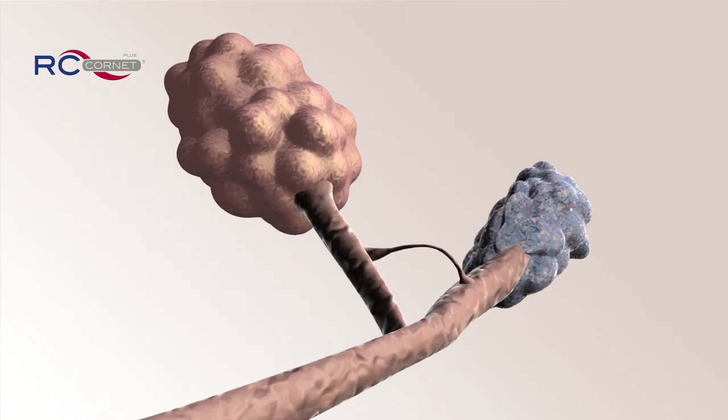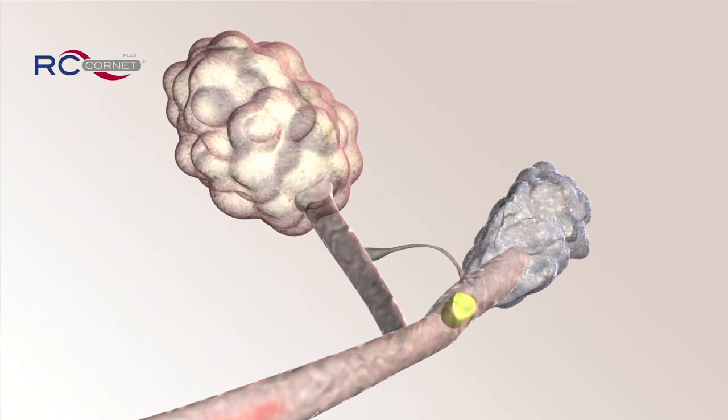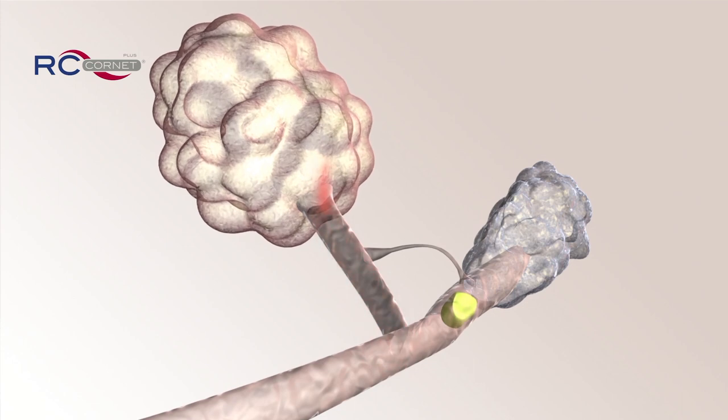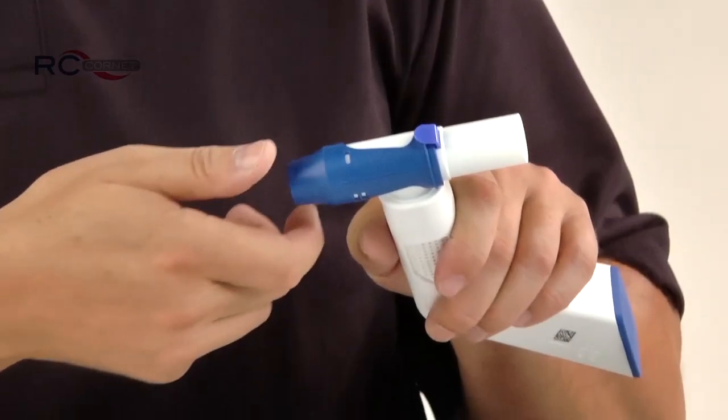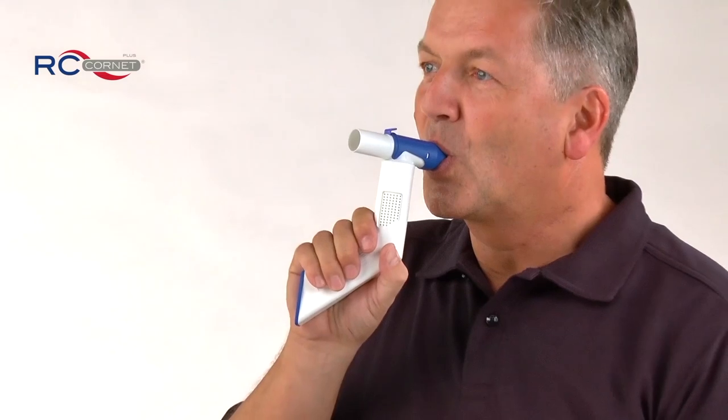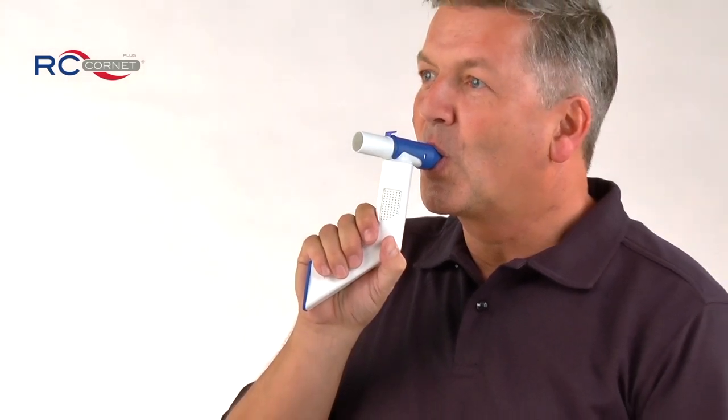Secretions can even cut off the supply of oxygen to some of the alveoli, causing breathlessness. Setting 1: Vibrating air pressure widens the airways and reduces breathlessness.